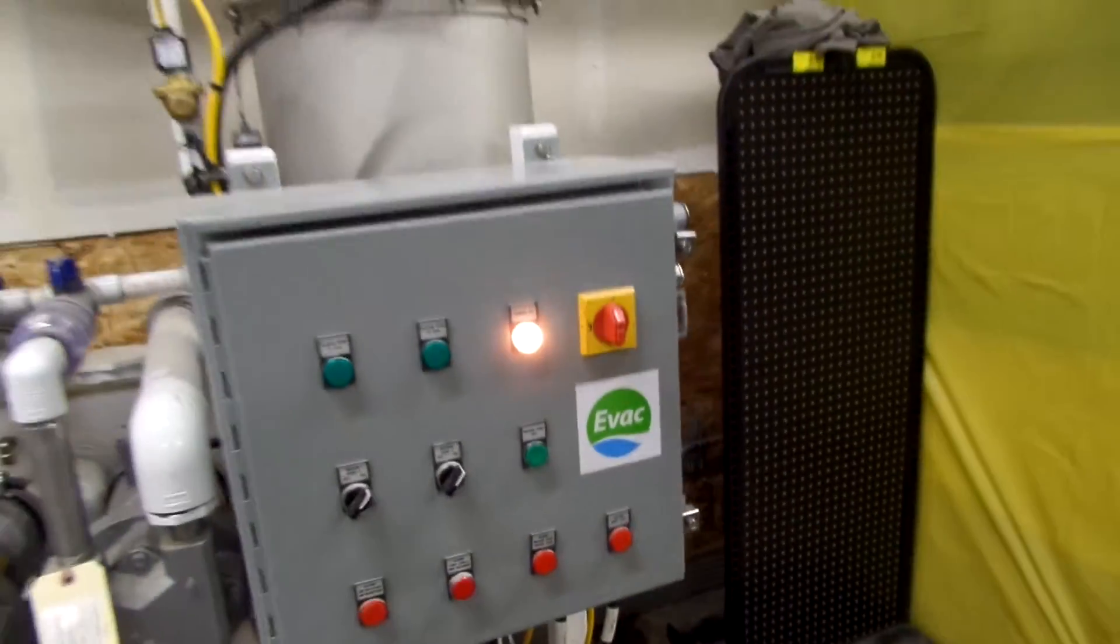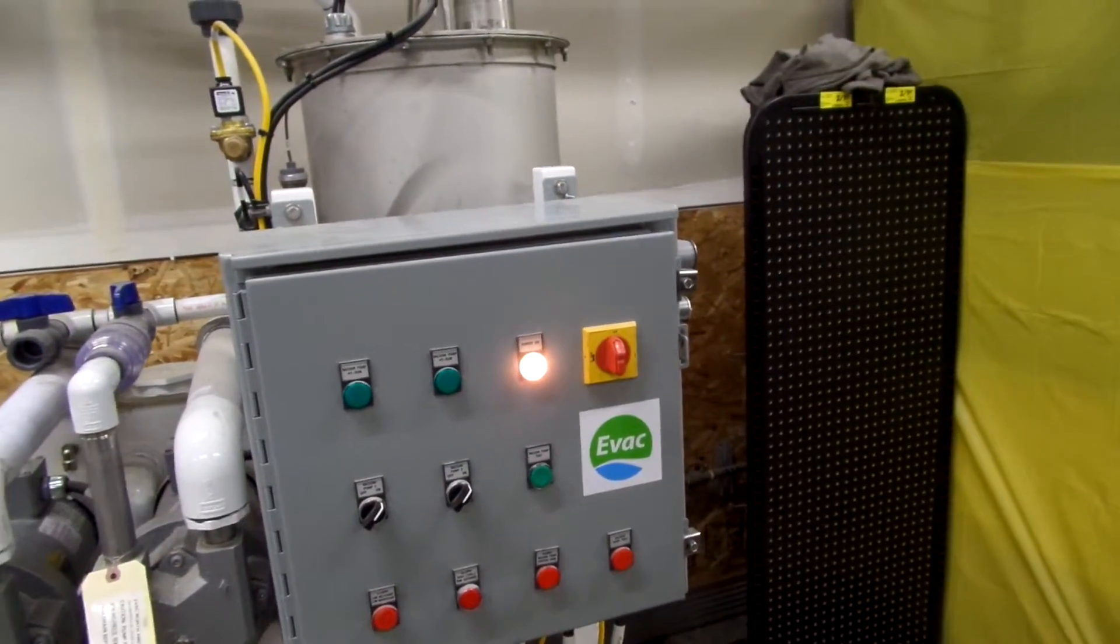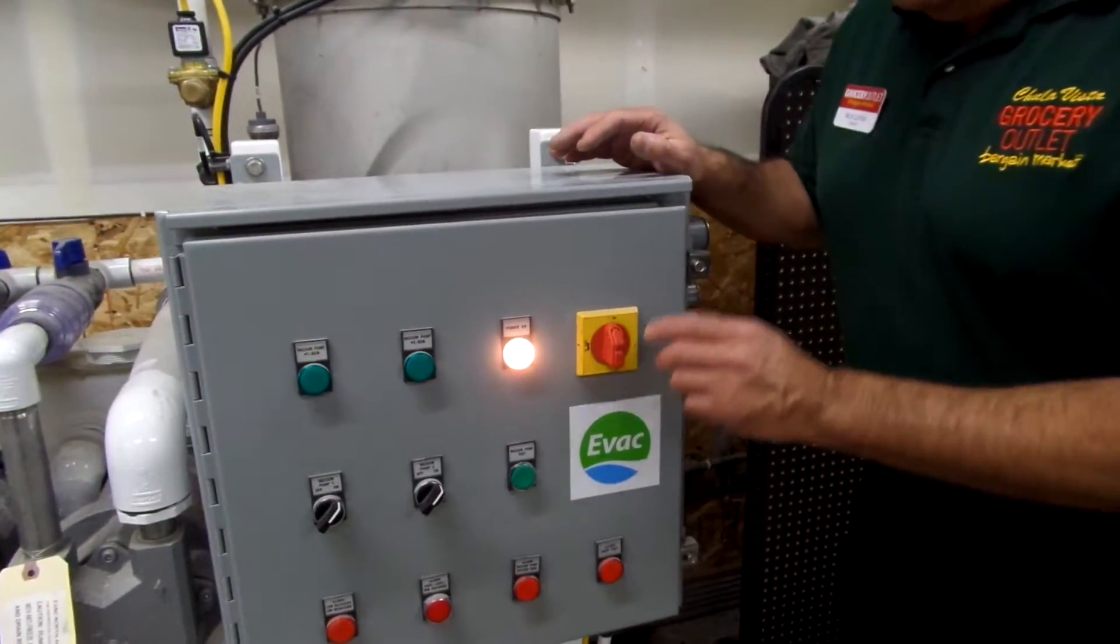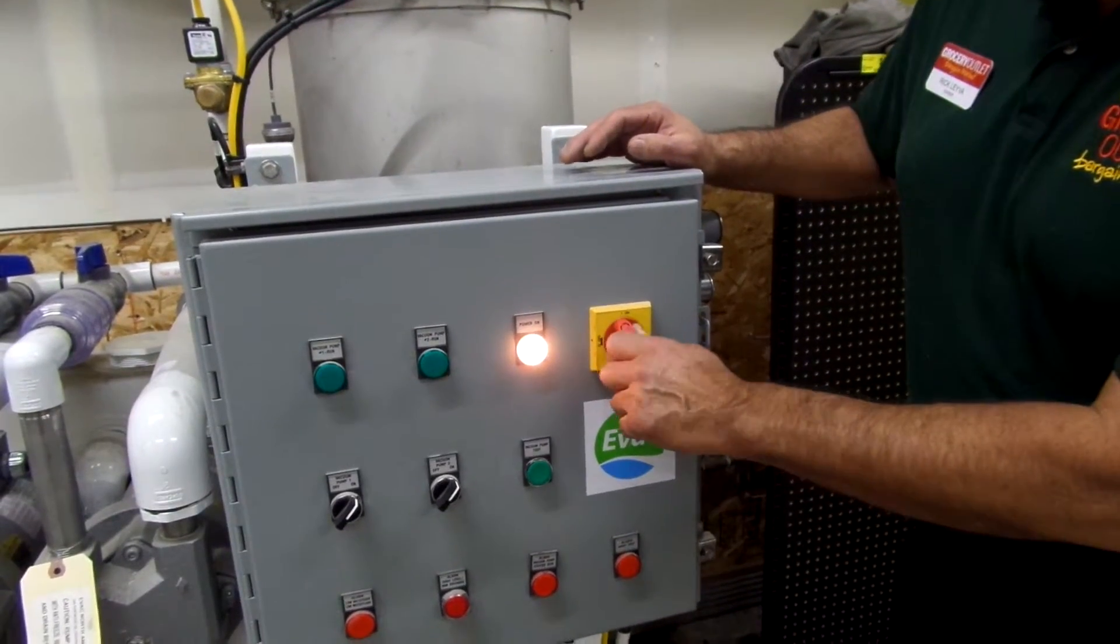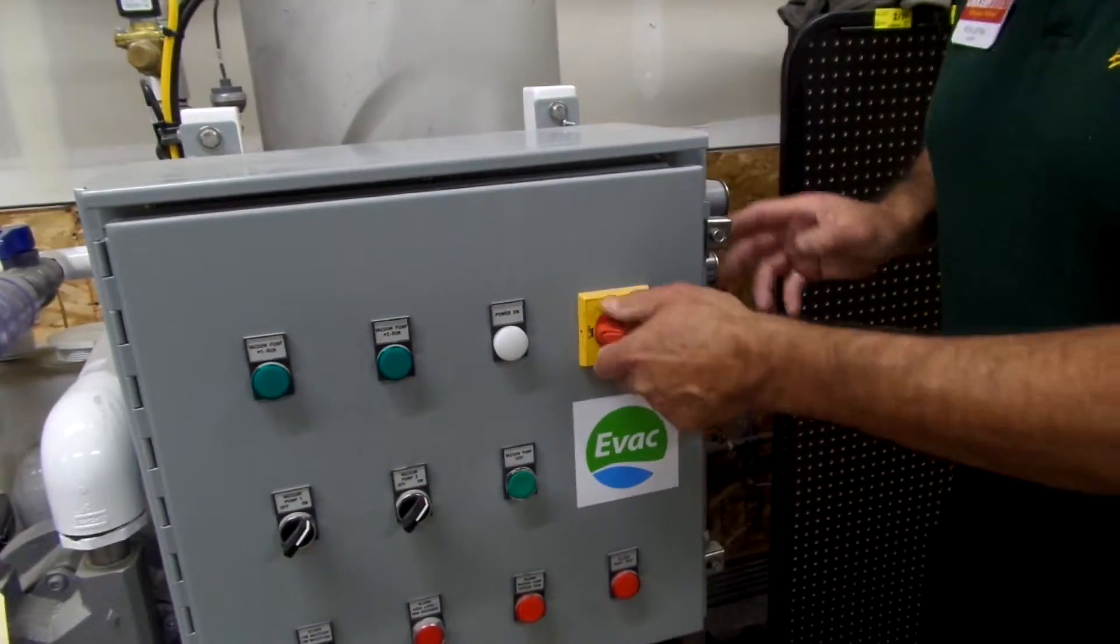So Rick's going to show you how he resets it. Go ahead, Rick. All right, so in order to get into the box itself, you turn your red switch to off. That allows you to open up this door.